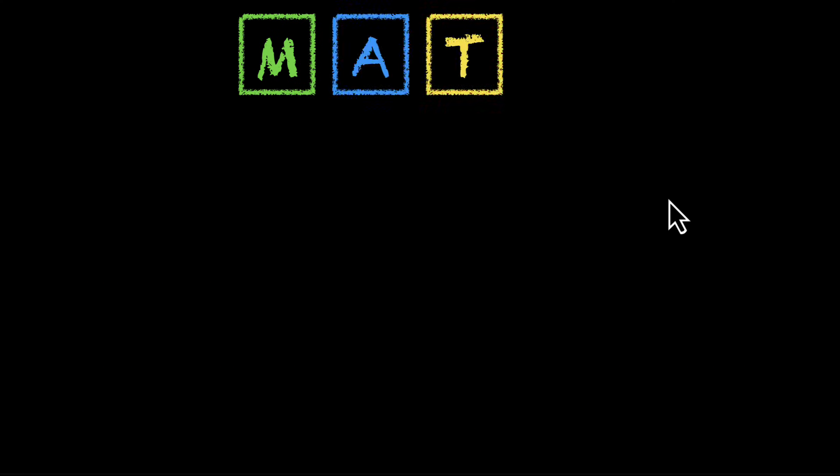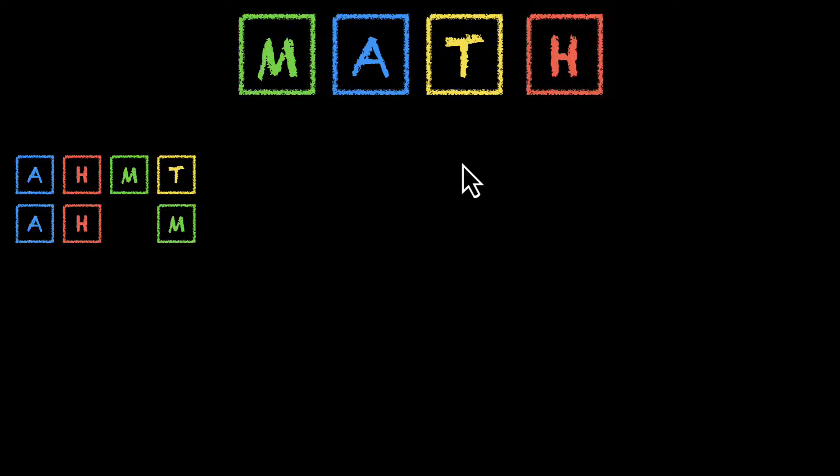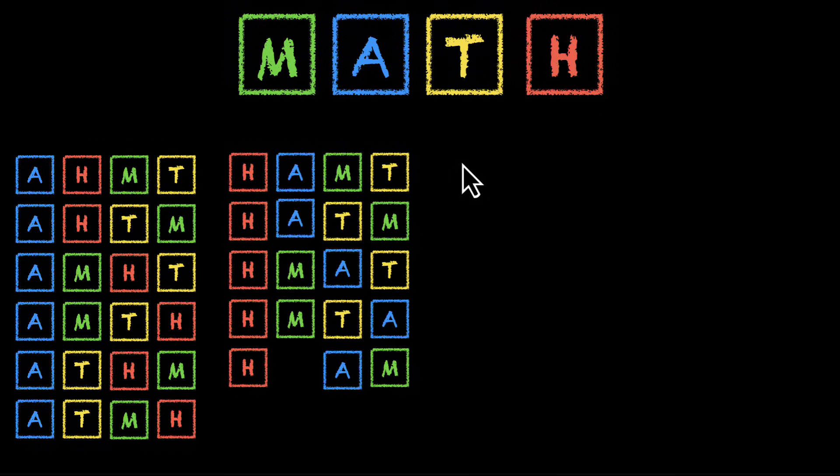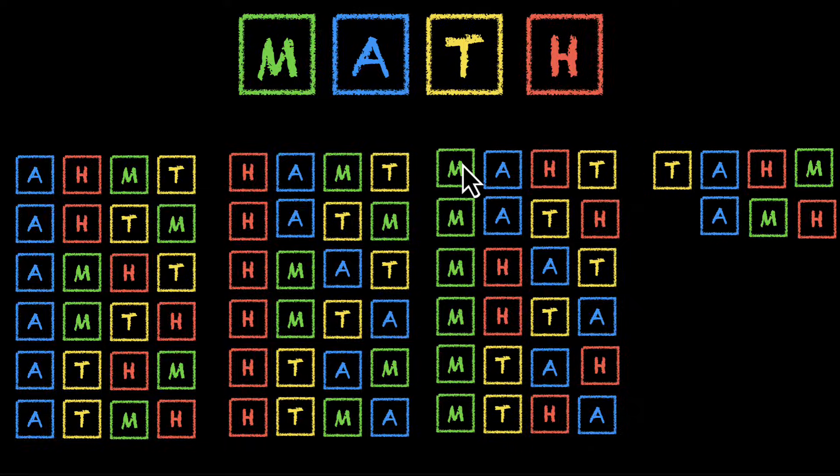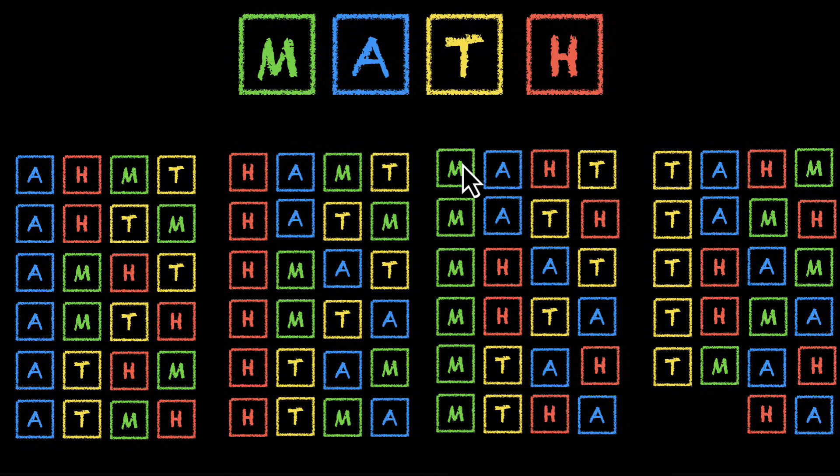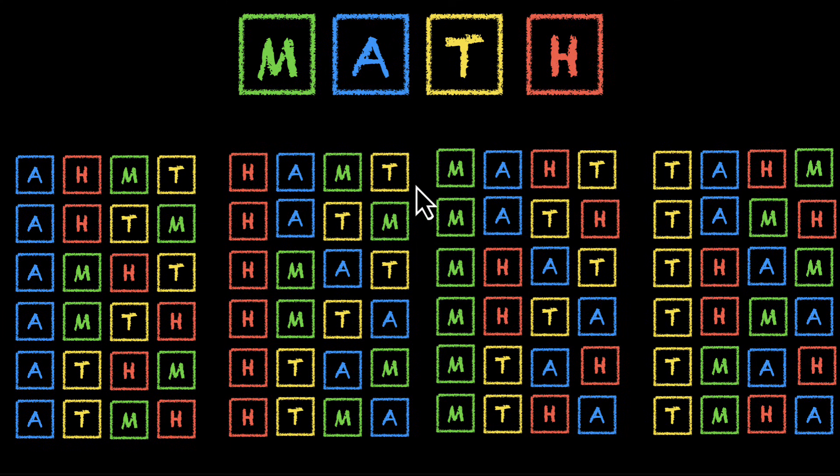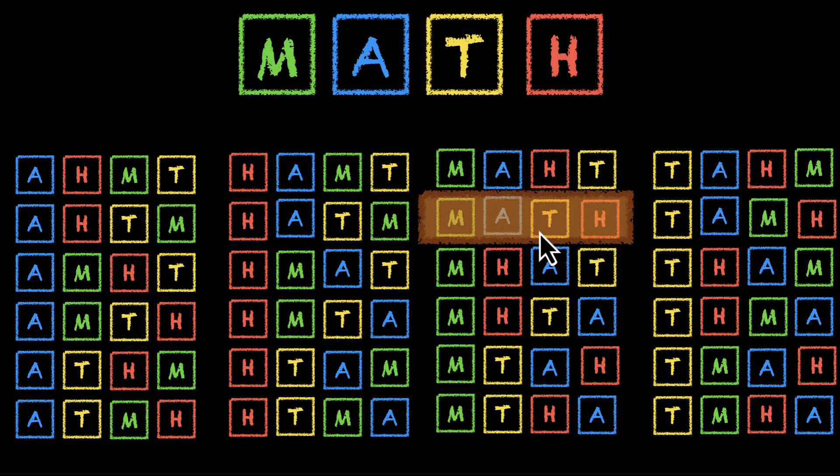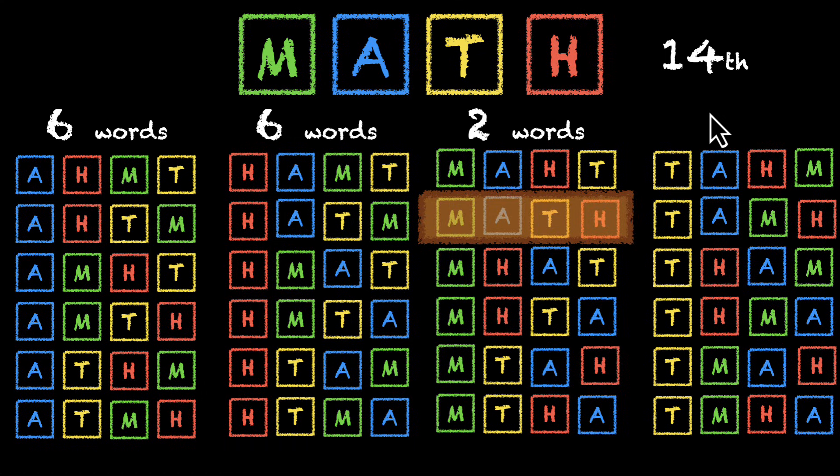We have M, A, T, and H, and we have 24 words that can be formed by rearranging this. Let's list all of them down. These are our 24 words: six of them start with A, six start with H, six start with M, and six start with T. Can we see where math is? We'll go to M, then A: MATH. This is where math is. We have six here and six here and one and two, so six plus six is 12 plus two is 14. The rank of math is 14th.